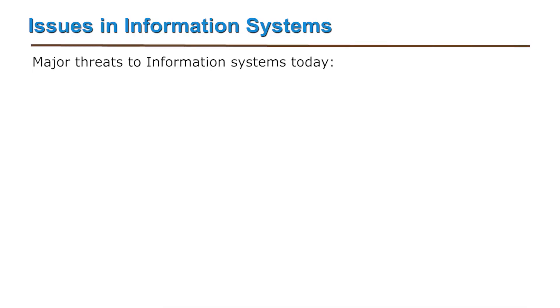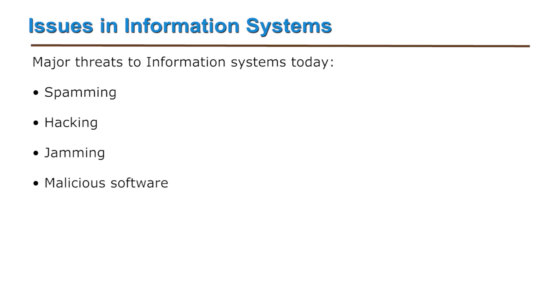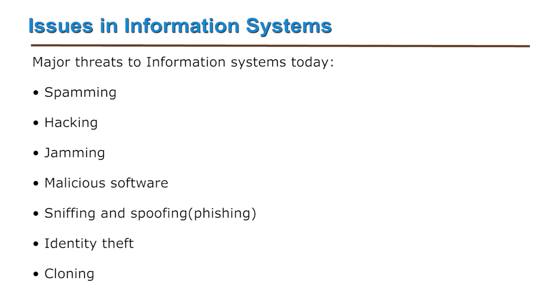The major threats to information systems today are spamming, hacking, jamming, malicious software, sniffing and spoofing, identity theft, and cloning. All the above-mentioned threats are explained in detail in a later section. In summary, the important point to be noted here is that security is a major challenge in information systems.